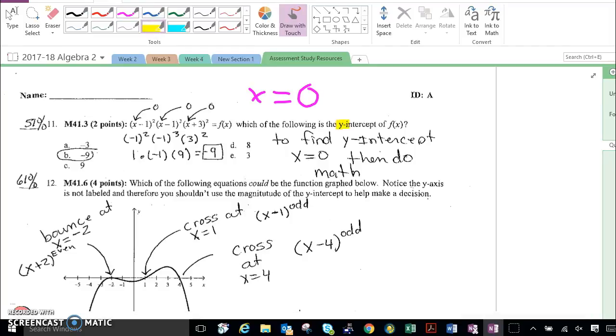For any time you're ever asked for the y-intercept, x must be 0. So we're going to put 0 in for each x in the original problem.